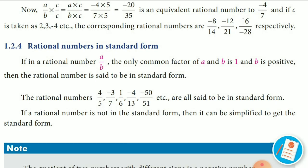Next, rational number in standard form. A rational number A by B, the only common factor is 1 and B is positive. So, standard form means the denominator must be a positive number and the common factor of numerator and denominator is 1. That type of numbers are called standard form of rational number.